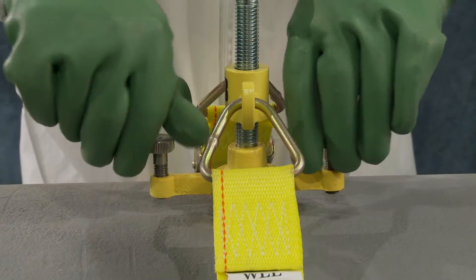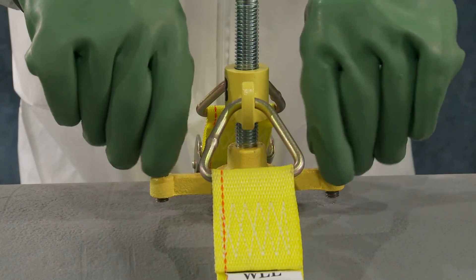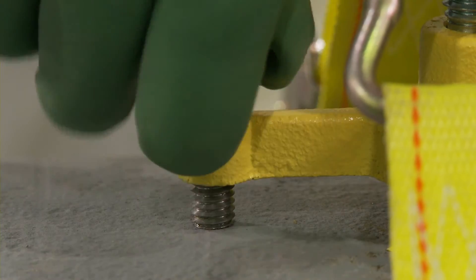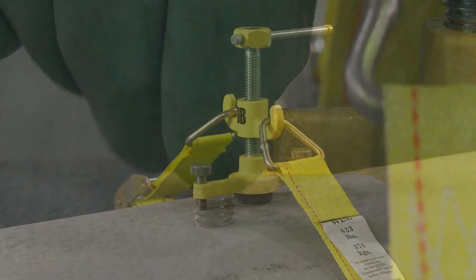Tighten thumbscrews until they contact the container but do not over-tighten. Adjust the thumbscrews for stabilization only. Test for leaks.